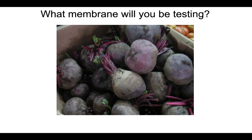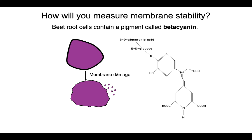We're going to take advantage of the fact that in every beet cell, there is a purple pigment called beta-cyanin. If the membrane is intact, the beta-cyanin stays within the cell and the surrounding solution stays clear. However, if you subject these beet cells to something that disrupts the structure of the membrane, you will disrupt its function, and beta-cyanin will begin to leak through the disrupted membrane into the surrounding solution, turning it purple. The more purple the surrounding solution becomes, the more the membrane structure has been disrupted and the more beta-cyanin has leaked out.